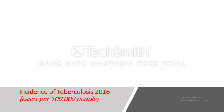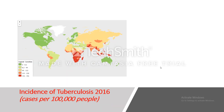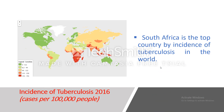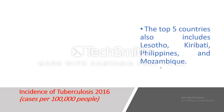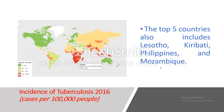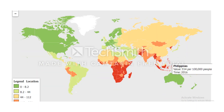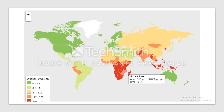Looking at the incidence of tuberculosis in 2016 — cases reported per 100,000 people according to the WHO — South Africa is the top country by incidence, with 781 cases per 100,000 people, which is a very high incidence. The top five countries also include Lesotho, Kiribati, Philippines, and Mozambique, where the incidence is 551 per 100,000 people, still very high.